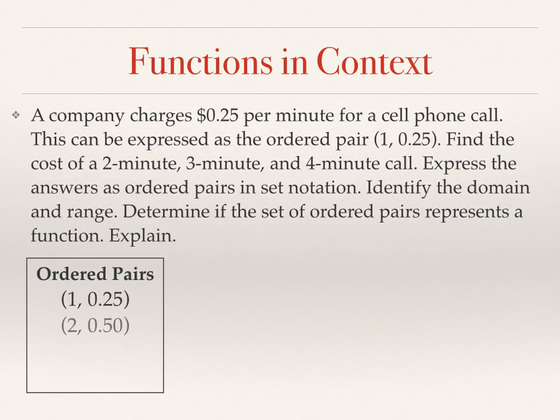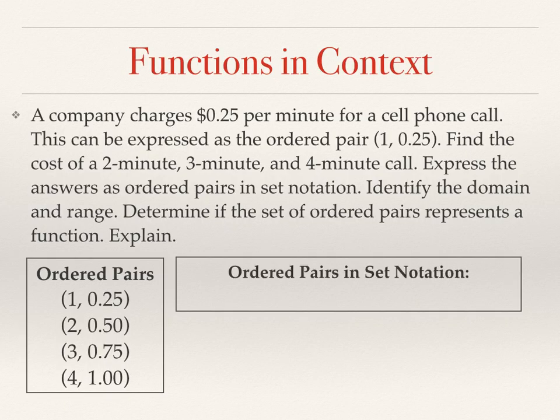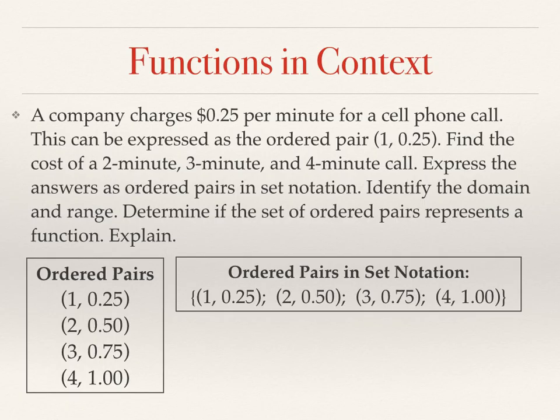Now for 2 minutes it would cost 50 cents. 3 minutes would be 75 cents. 4 minutes, a dollar. To take that list of ordered pairs and write it in set notation just means write it from left to right and include braces around the ordered pairs.